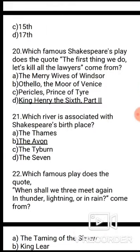Question 21: Which river is associated with Shakespeare's birth place? Options: A. The Thames, B. The Avon, C. The Tyburn, D. The Severn. The correct answer is B, the Avon.